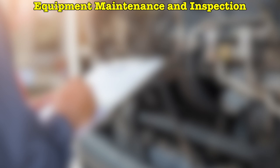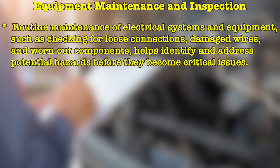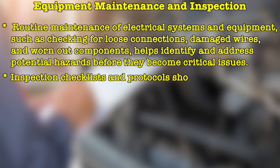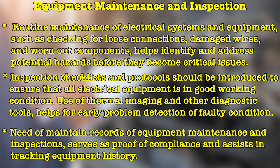Routine maintenance of electrical systems and equipment — such as checking for loose connections, damaged wires and worn-out components — helps identify and address potential hazards before they become critical issues. Inspection checklists and protocols should be introduced to ensure all electrical equipment is in good working condition. Use of thermal imaging and other diagnostic tools helps for early detection of faults. Records of equipment maintenance and inspections serve as proof of compliance and assist in tracking equipment history.